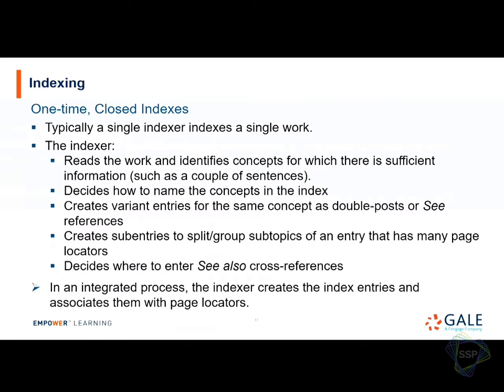Indexing for the one-time closed back-of-the-book index is typically done by a single indexer for a single book. The indexer reads the book, determines the main topics, decides how to describe them, what the terms will be, what will be 'see' references, double posts, and what will be subentries. When you have too many page locators — beyond about five — you break them into subdivision groupings. It's an integrated process: the indexer creates the index terms and provides locators to page numbers simultaneously.